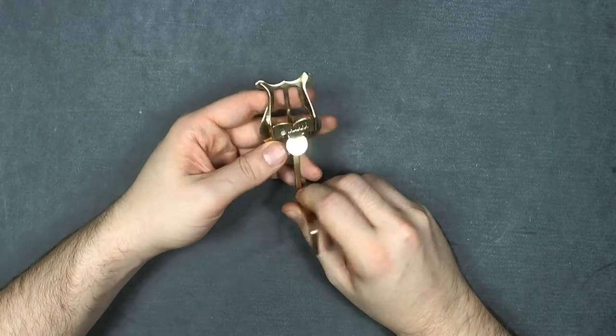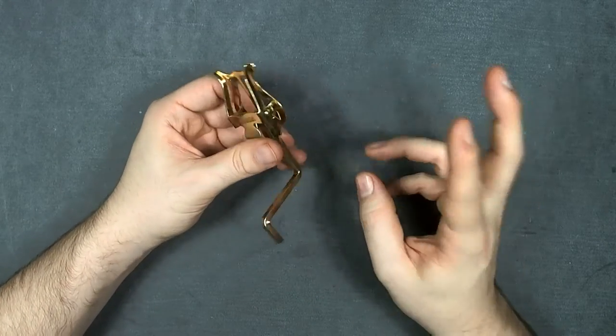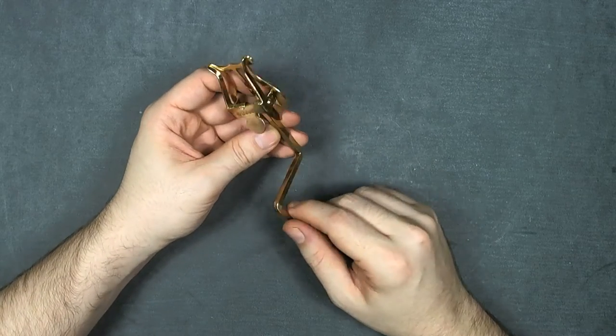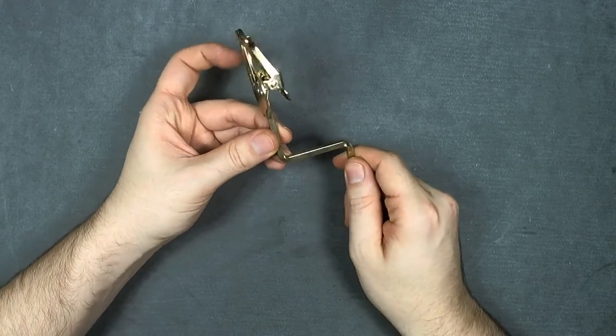This is the Yamaha saxophone lyre in the gold color. It says it's plated lacquered brass.